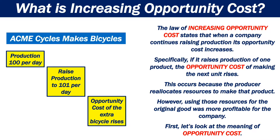When a company continues raising production, its opportunity cost increases. Specifically, if it raises production of one product, the opportunity cost of making the next unit rises. This occurs because the producer reallocates resources to make that product. However, using those resources for the original good was more profitable for the company.